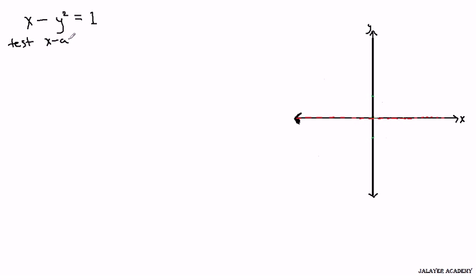So we're going to test x-axis symmetry. So x minus, in parentheses, negative y squared equals 1, because we replaced y with negative y. Now let's simplify this. x minus negative y squared is positive y squared equals 1.